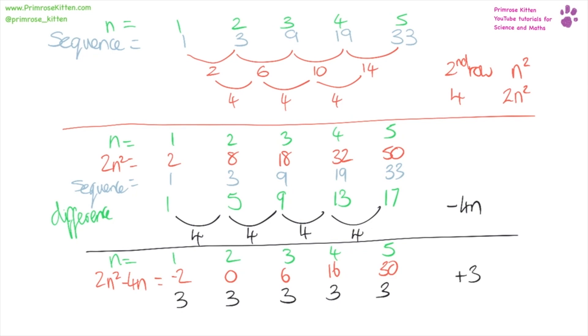So our overall nth term for this sequence is two n squared minus four n plus three.